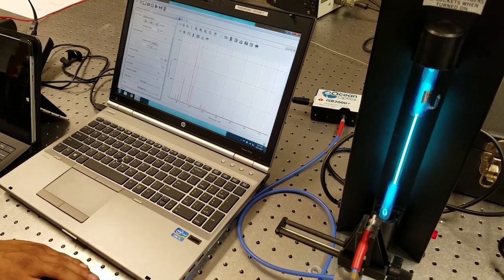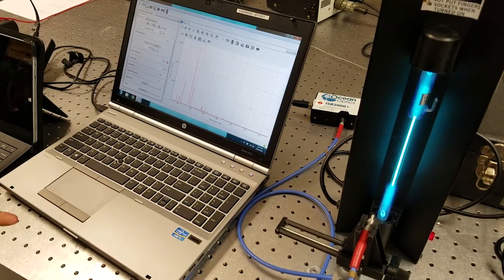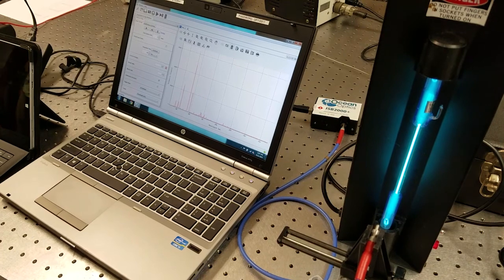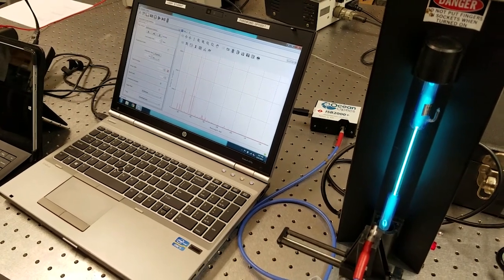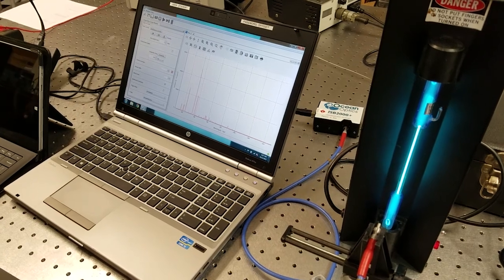So here you can see a mercury gas lamp. It's glowing blue, and that's due to the fact that the actual electronic energy levels inside of this element mercury allow for very specific quanta of energy to drop when electrons are going back into their ground states.